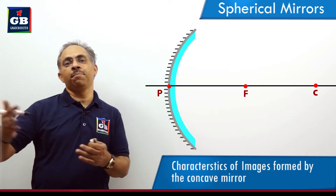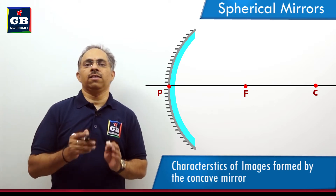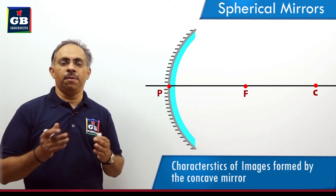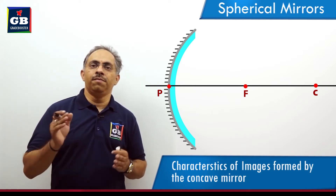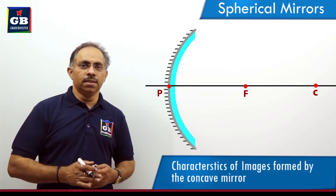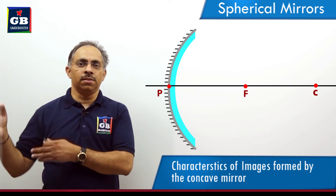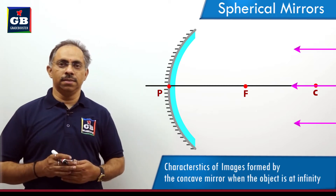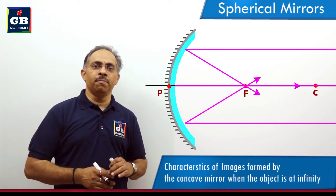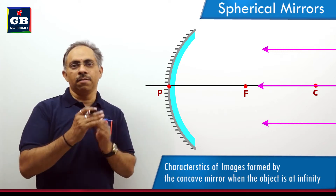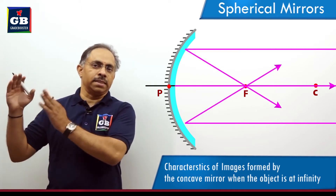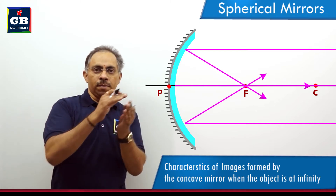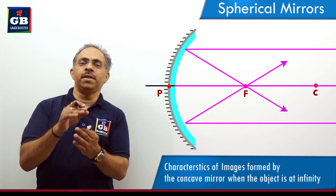In the case of a concave mirror, we can consider different positions of the object. First, we consider the object to be at infinity. Then the image will be formed at the principal focus. Because the object is at infinity, we consider the rays of light received at the mirror to be a parallel beam, parallel to the principal axis. When incident on the concave mirror, after reflection the reflected beam will pass through the principal focus. So the image is formed at the principal focus.